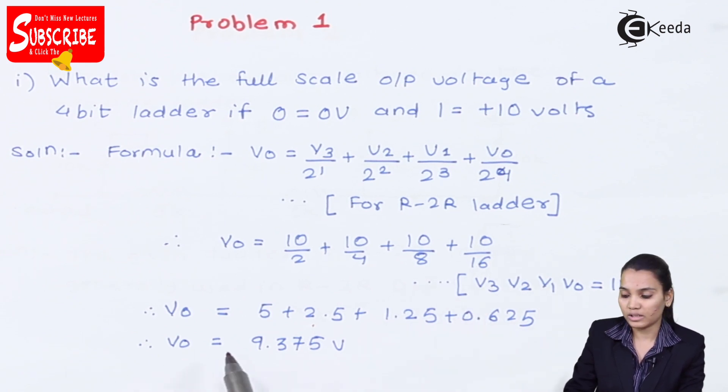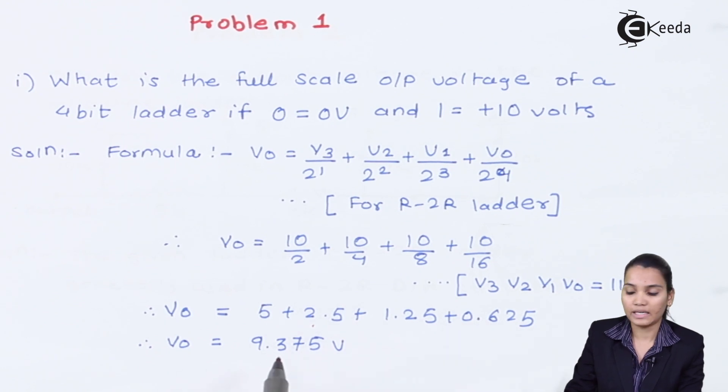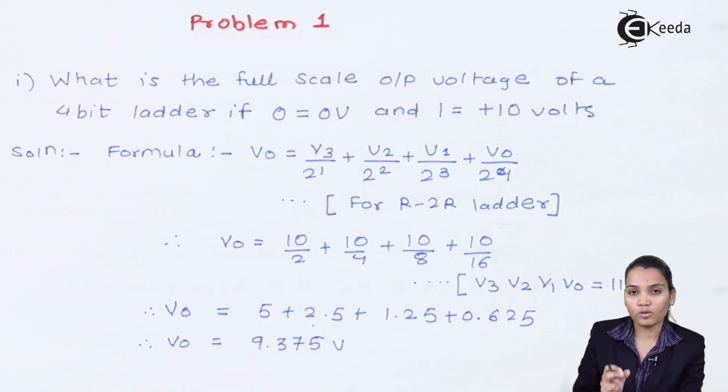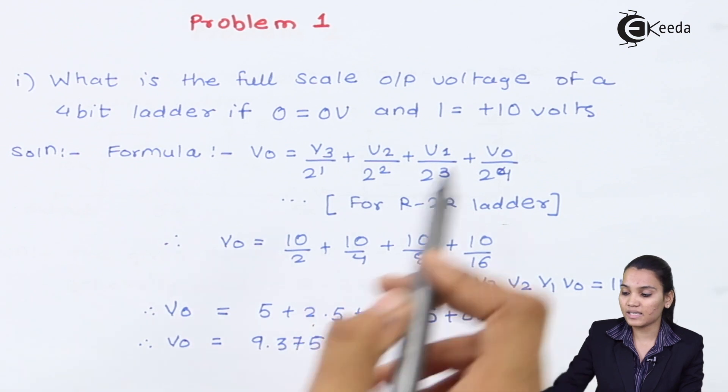V0 equals 9.375 volt after adding all these values. The very important lesson from this problem is that whenever we are asked to calculate the full scale output voltage, always consider the input as the high value, that is consider all the bits as high as 1, and then represent that particular one bit by the input voltage which is asked in the problem, that is here it was given as 10 volt.